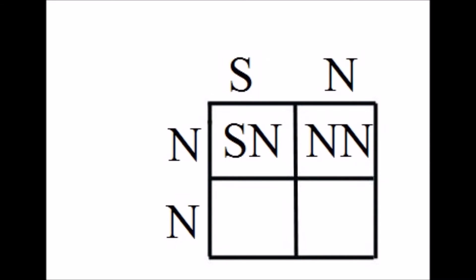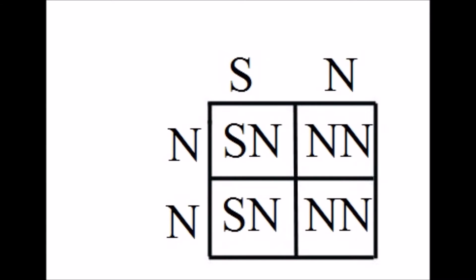This gives us our top two genotypes for the offspring: we have Sn and Nn. So we can see right away that we have one spider and one normal. If we finish up the square, we see we have two spiders and two normals — that puts us at 50% spider ball python and 50% normal ball python.